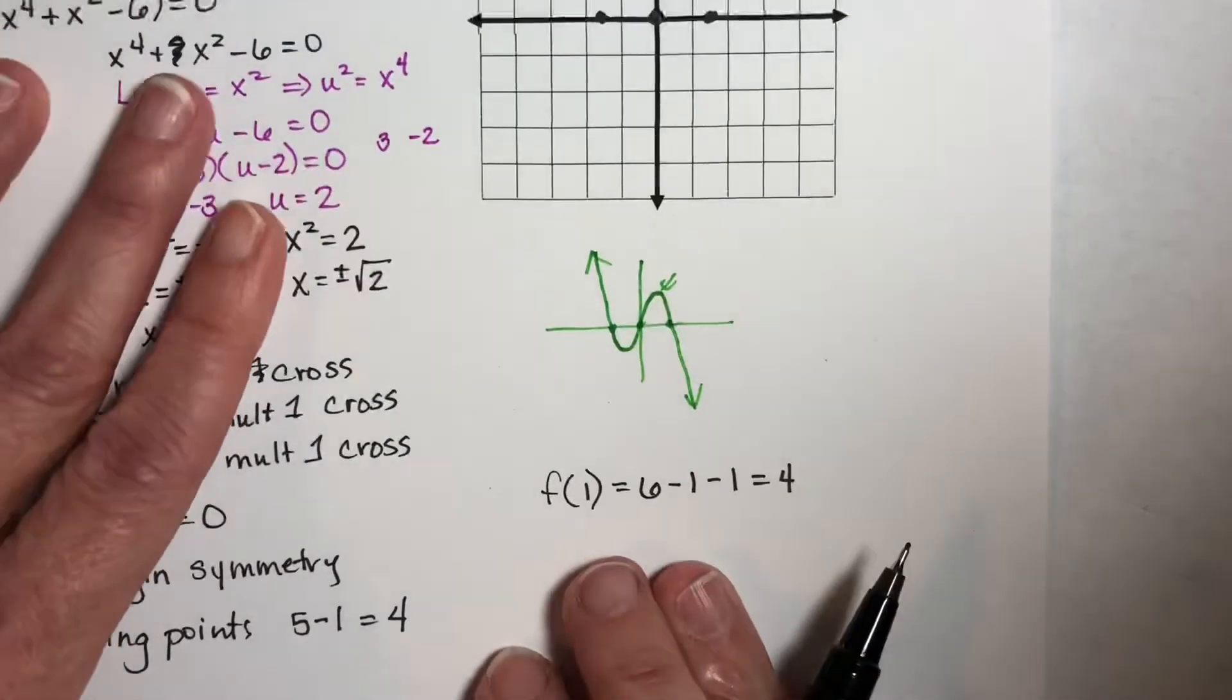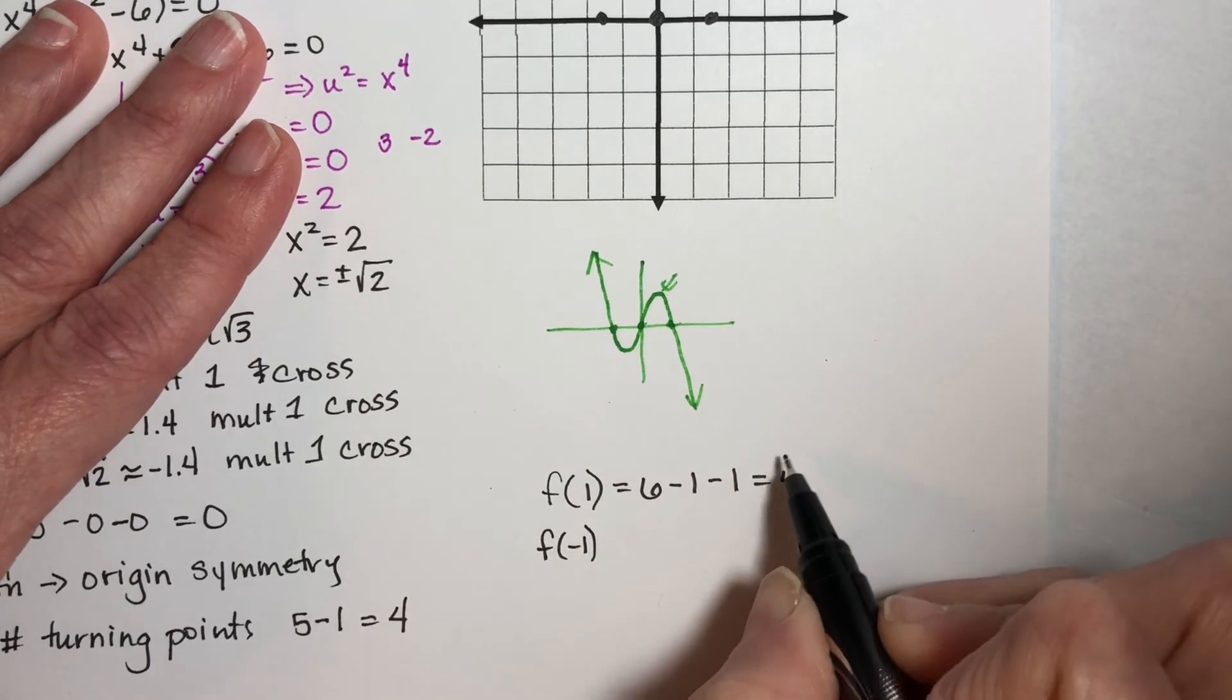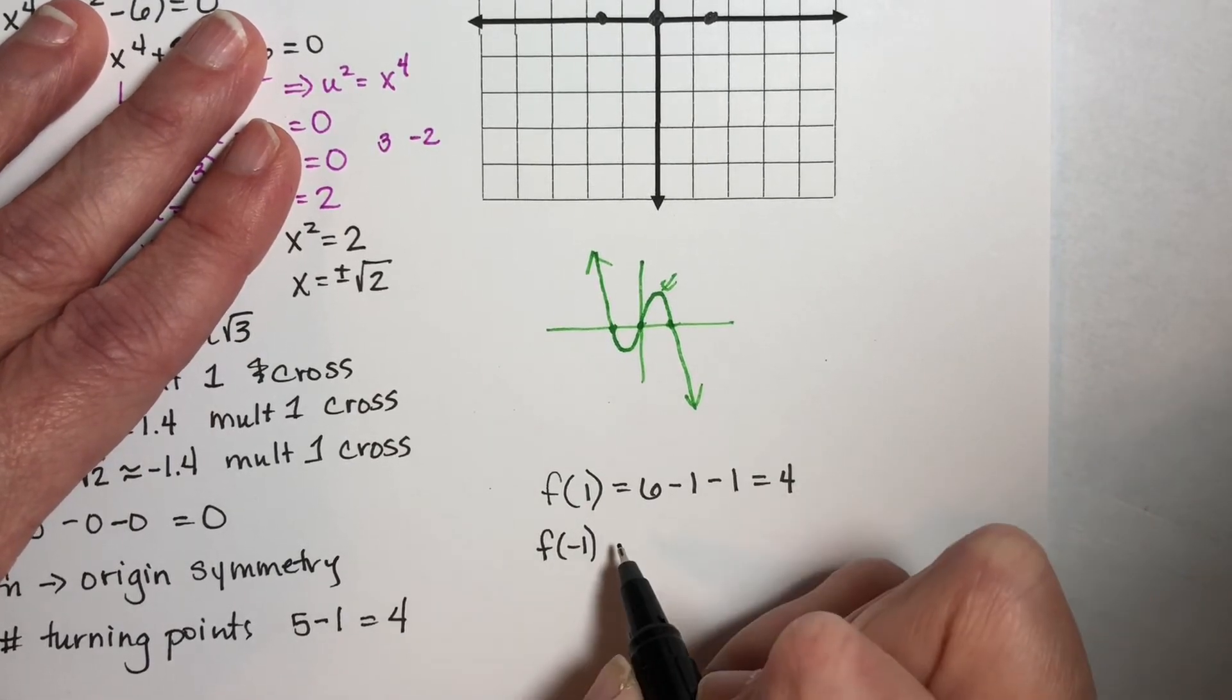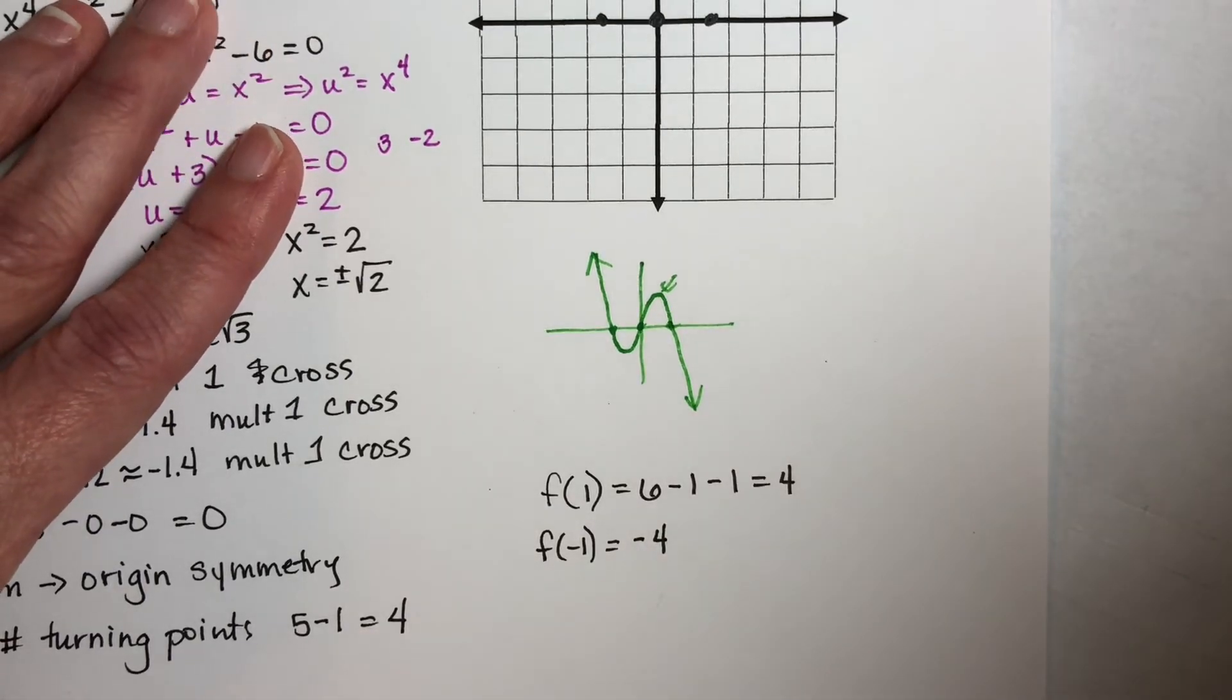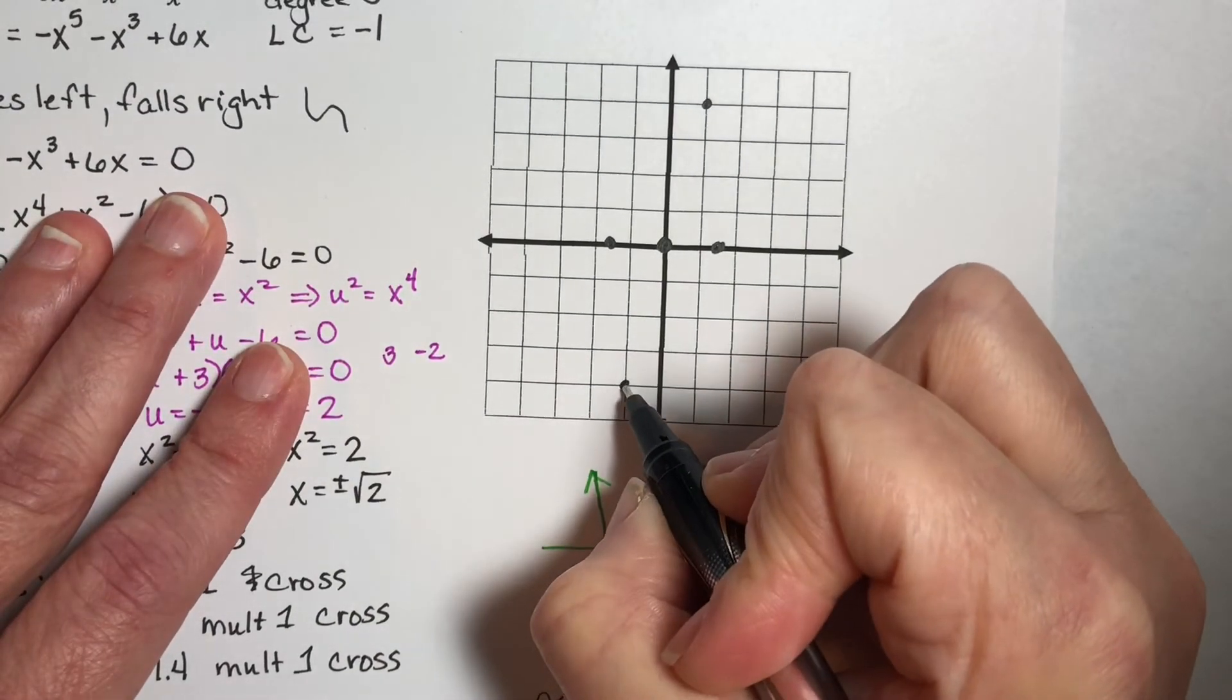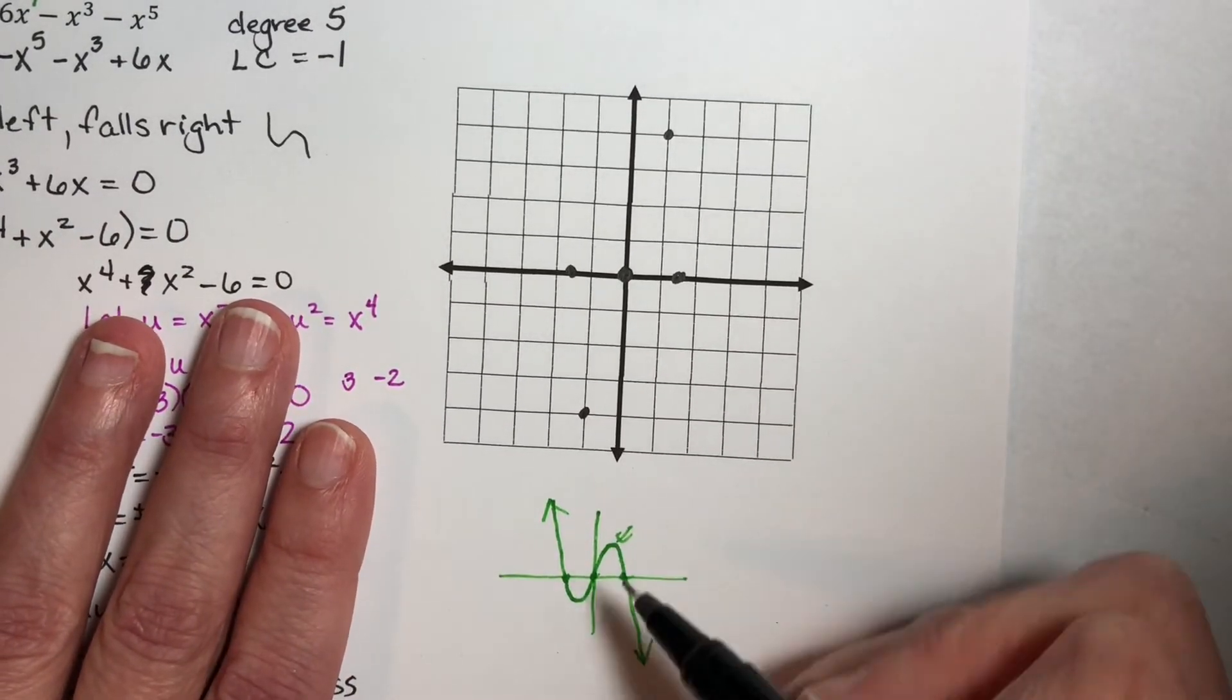Now, I know I have an odd function, so that should tell me that if I plug in negative 1, I will get the same number value except opposite sign. So if I plug in negative 1, I will get negative 4, which tells me this goes right down to here. So I get a better idea of how big these bumps are.